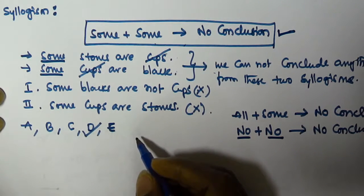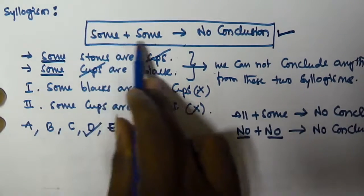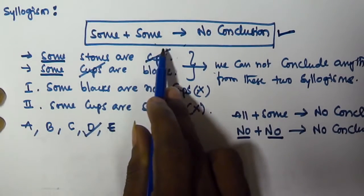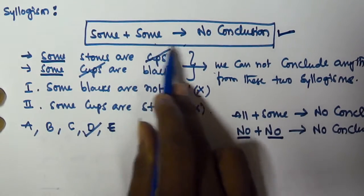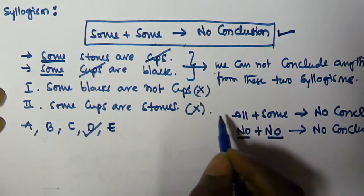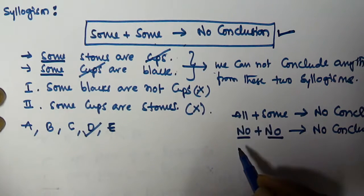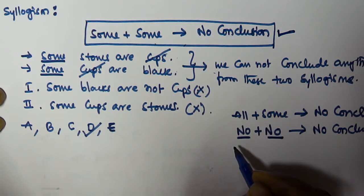I hope you got this — a very easy rule. Whenever both statements start with 'some' and 'some,' there is no conclusion. Very easy to understand. I hope you got this one. Thank you very much for watching this video, and please subscribe.